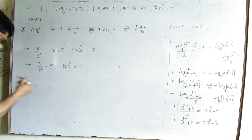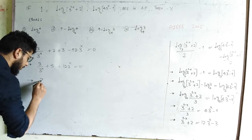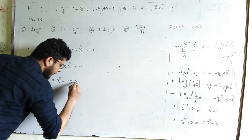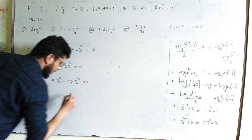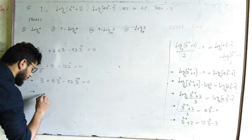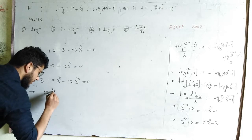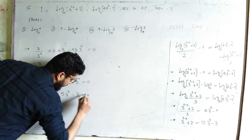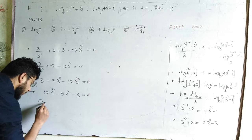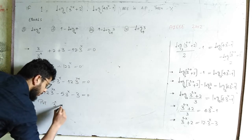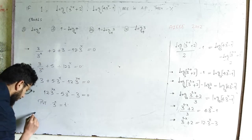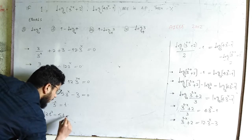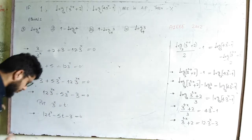Multiplying through by 3^x and taking the negative sign out, we are left with: 12·3^(2x) - 5·3^x - 3 = 0. Now putting 3^x equal to t, this gives: 12t² - 5t - 3 = 0. This reduces to a quadratic equation. Using the quadratic formula, t = [-b ± √(b² + 4ac)] / 2a, that is t = [5 ± √(25 + 4·12·3)] / (2·12).